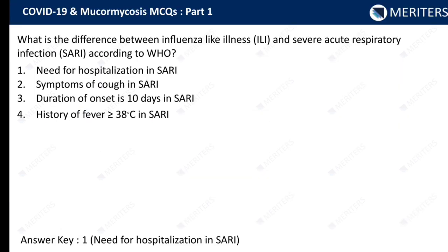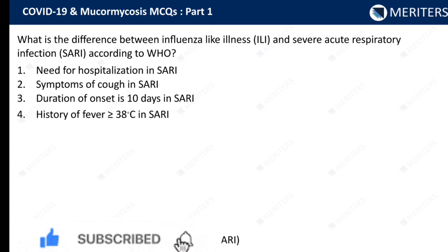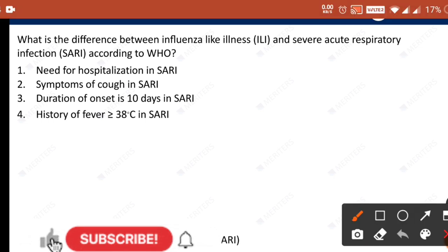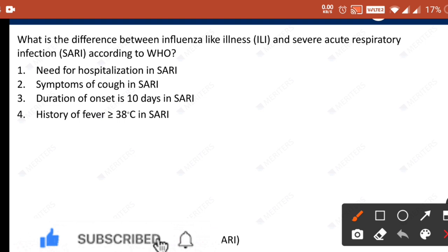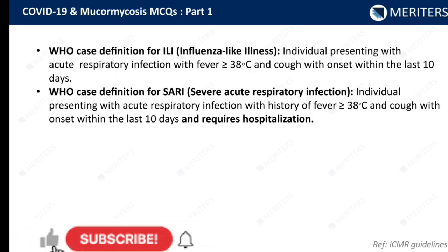What is the difference between influenza-like illness (ILI) and severe acute respiratory infection (SARI) according to WHO? You should know the specific guidelines for ILI and SARI. The options include need for hospitalization in SARI, symptoms of cough in SARI, duration of onset within 10 days in SARI, or history of fever greater than or equal to 38°C. The correct answer is that need for hospitalization is required in SARI. These are the definitions given by WHO for ILI and SARI.